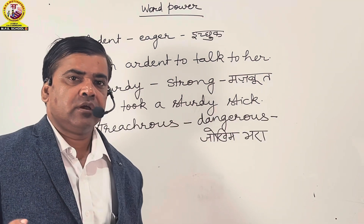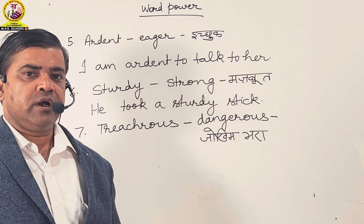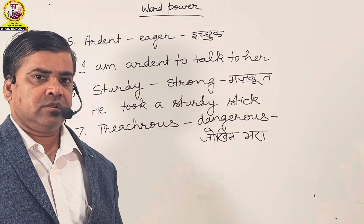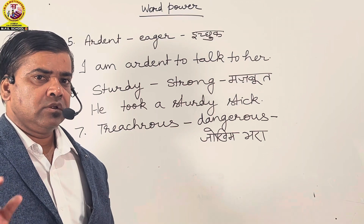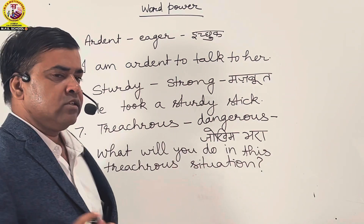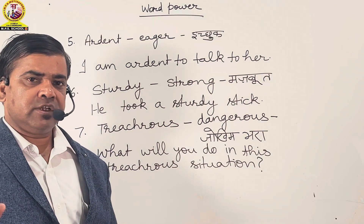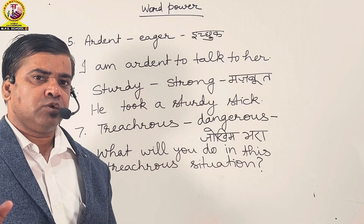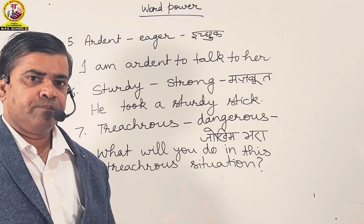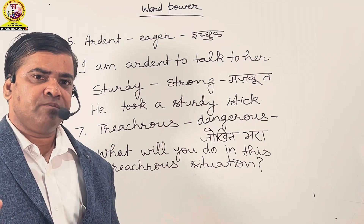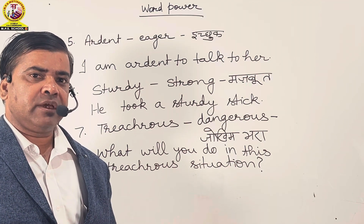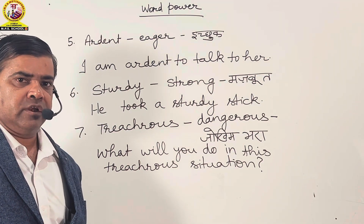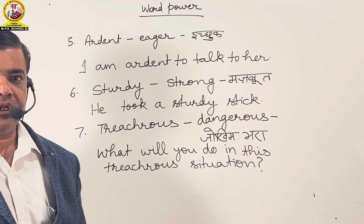Our seventh word is 'Treacherous'. Its synonym is dangerous, which means jokhim bhara. Friends, I have used the word treacherous in a sentence. The sentence is: What will you do in this treacherous situation? Aap is jokhim bhare paristhiti mein kya karenge? Friends, now you can take its screenshot or write it down in your notebook.